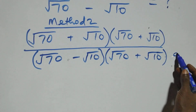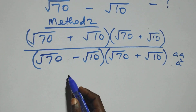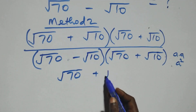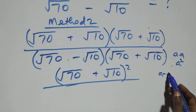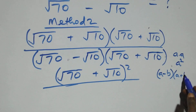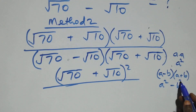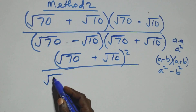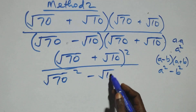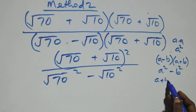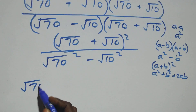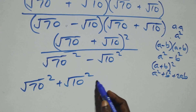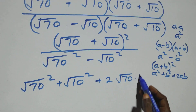Same thing: multiplying when we have a times a, that's a squared. We can express the numerator as (√70 + √10)². In the denominator, this follows from (a − b)(a + b), which equals a² − b². Here a is √70, so we have √70 squared, minus b = √10, that's √10 squared. The numerator expansion (a + b)² equals a² + b² + 2ab: root 70 squared plus root 10 squared plus 2 times root 70 times root 10.